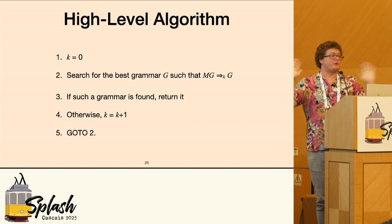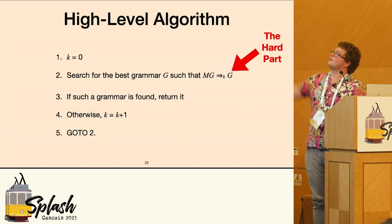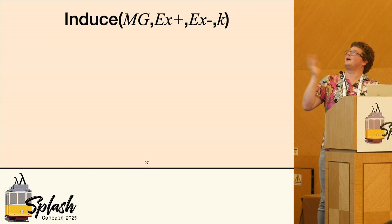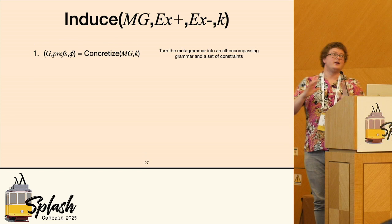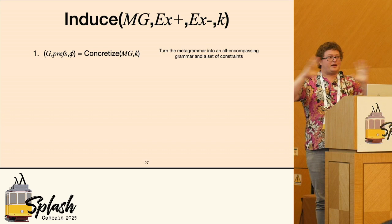Otherwise, just increment the complexity and continue. So what's the hard part here? The hard part is figuring out this best grammar. So this is our induce function with the metagrammer, K, and our positive and negative examples. What we do is we take this metagrammer and we explode it out into this giant grammar that includes all of the possible grammars in the metagrammer.